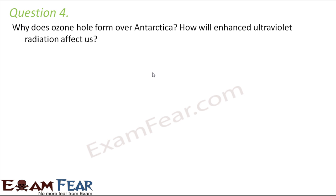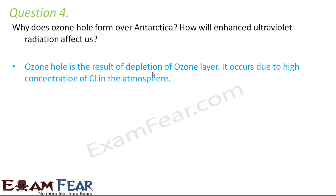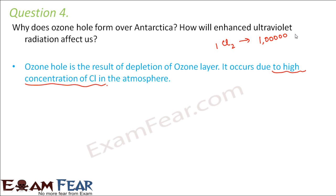Question number 4: Why does ozone hole form over Antarctica? The ozone hole is caused due to the depletion of the ozone layer. When the amount of ozone decreases, it creates a hole in the ozone layer. This occurs in Antarctica due to the high concentration of chlorine there. One chlorine molecule is capable of destroying one lakh molecules of ozone, so an abundance of chlorine in any location will cause an ozone hole to form.